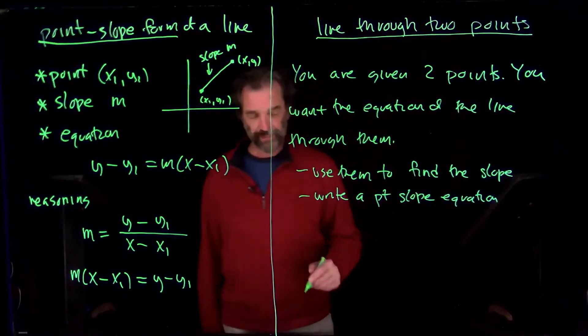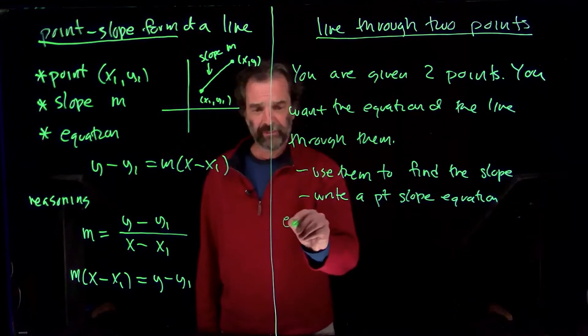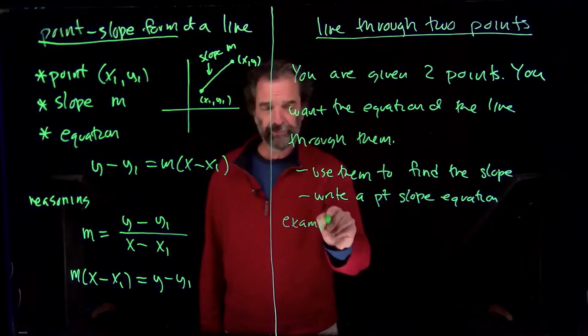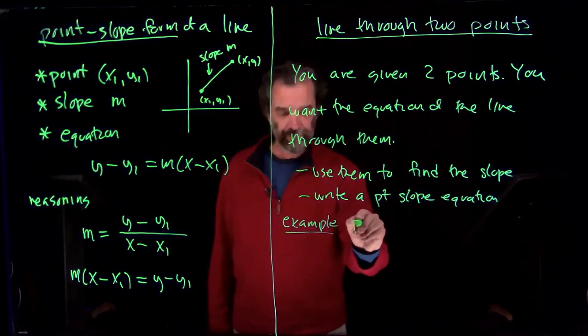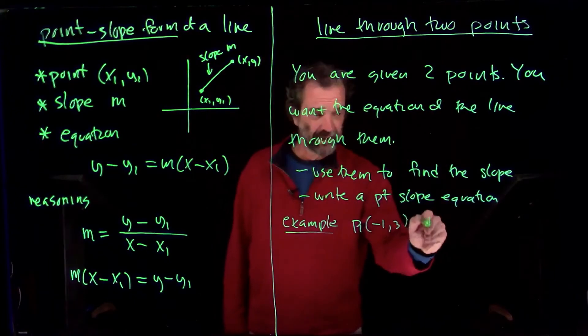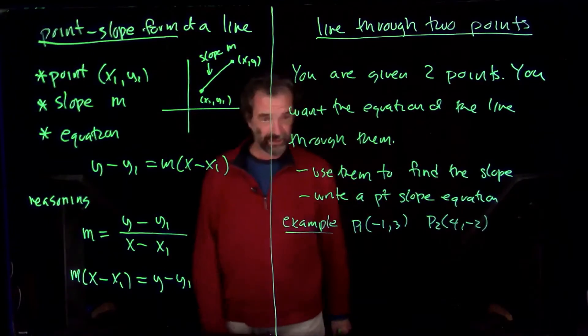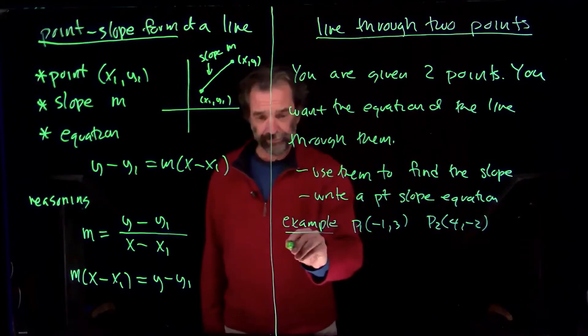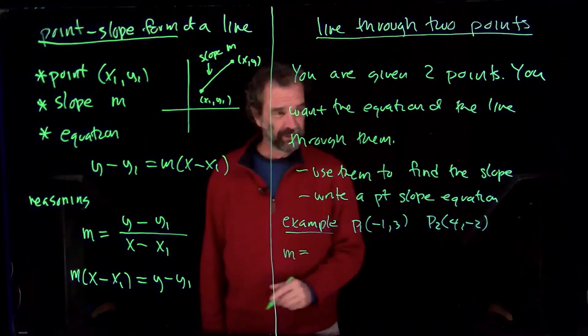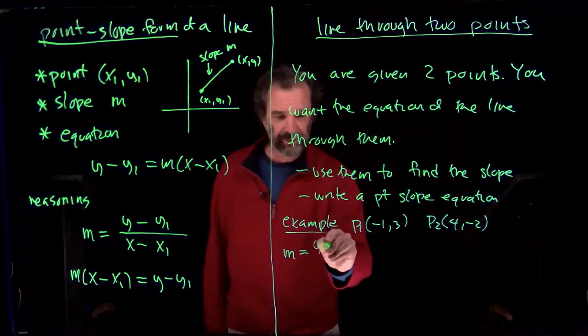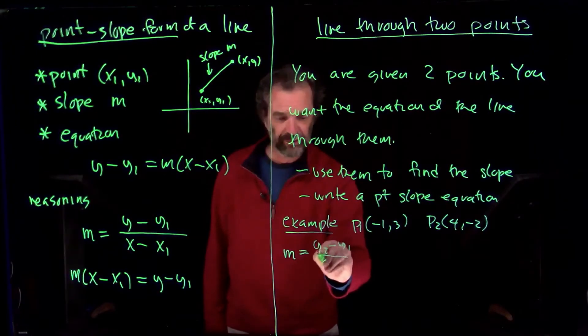So let's look at this example. If the first point is (-1, 3) and the second point is (4, -2), then we compute the slope. We'll write it down here: y₂ minus y₁ over x₂ minus x₁.